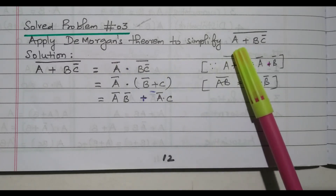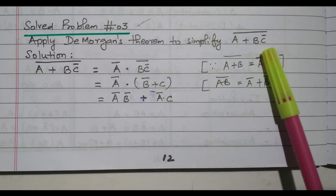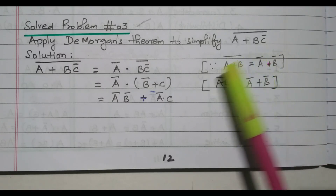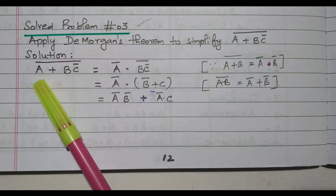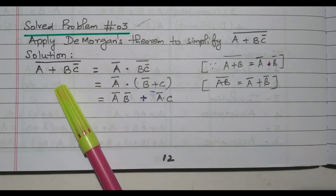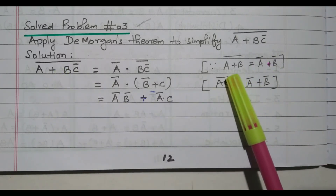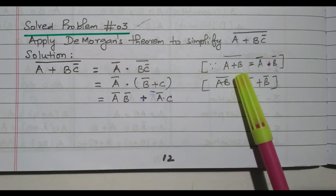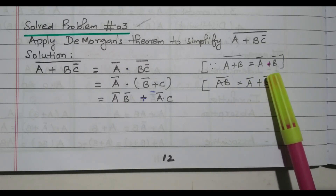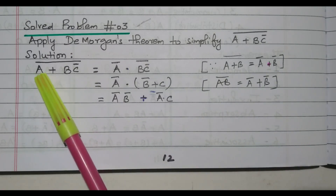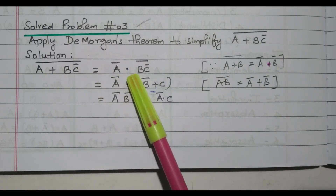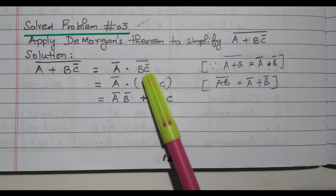The given expression is A plus BC-bar, the whole bar. We need to reduce this expression. By using De Morgan's theorem, A plus B the whole bar equals A-bar dot B-bar. Taking A as A and BC-bar as B, we can write this as A-bar dot BC the whole bar.